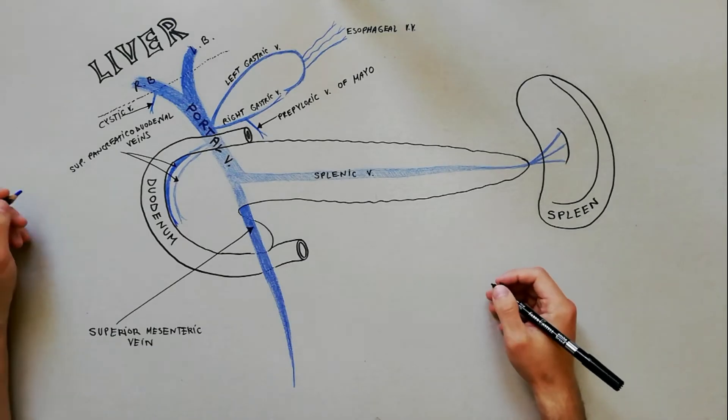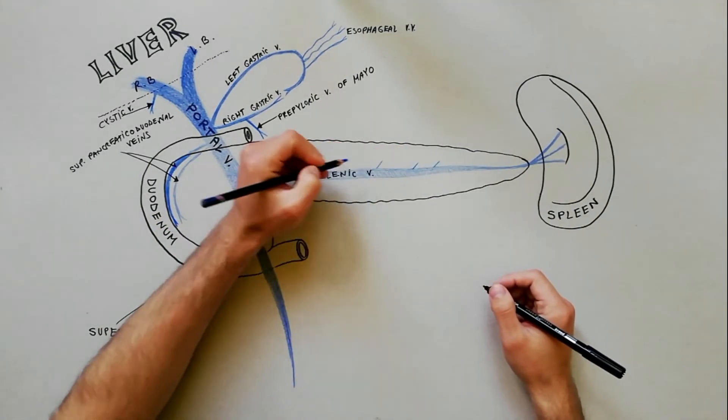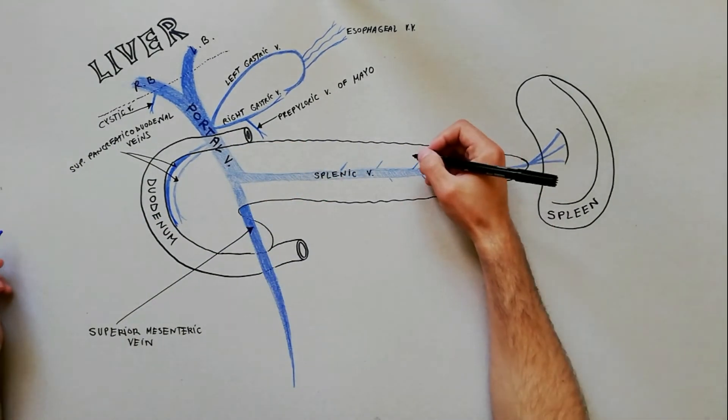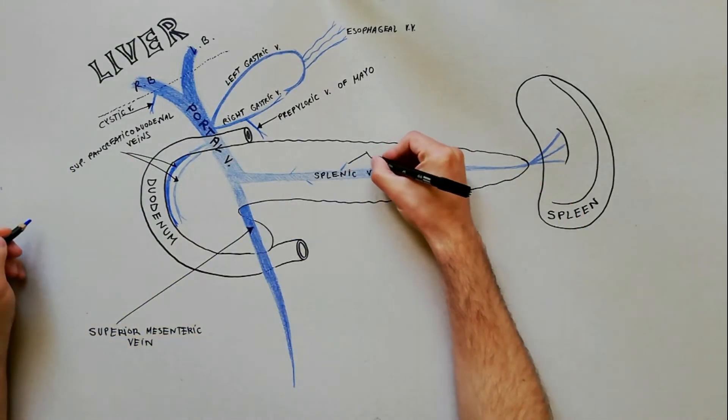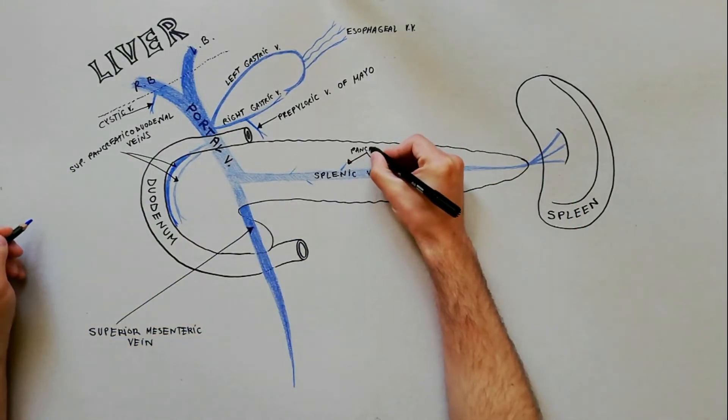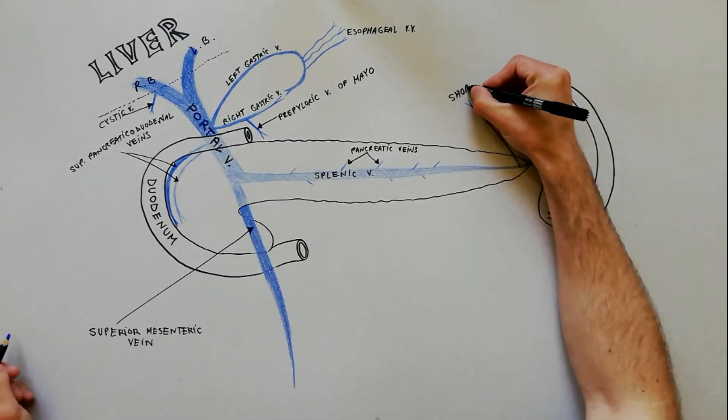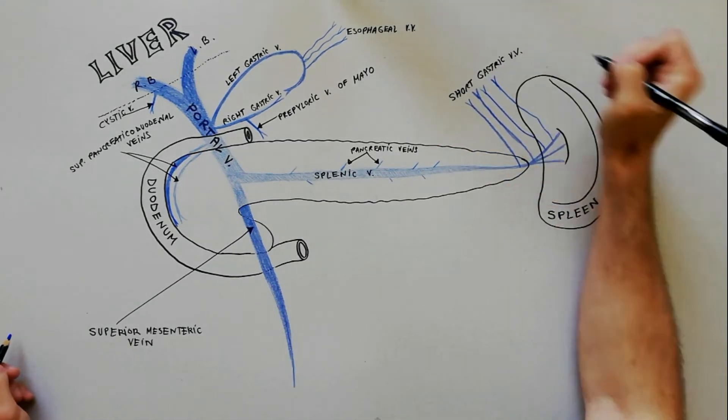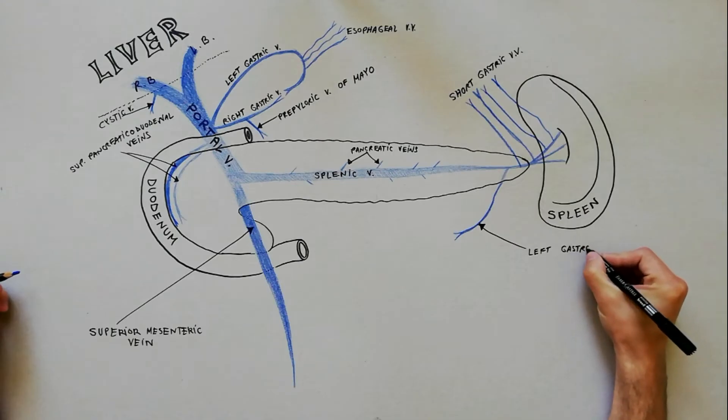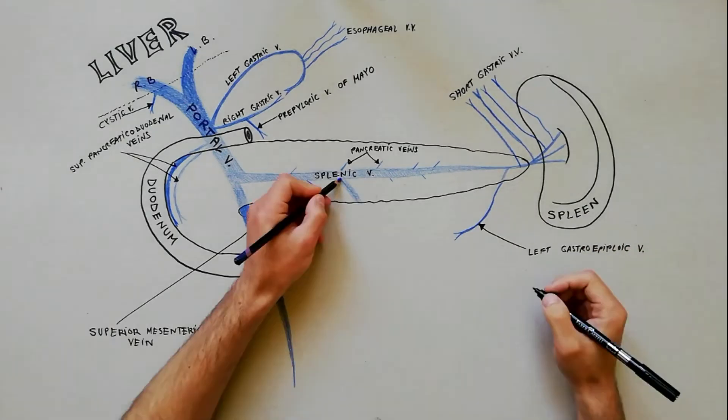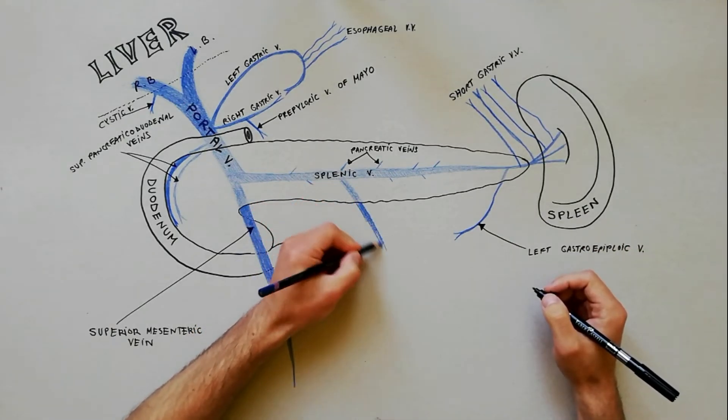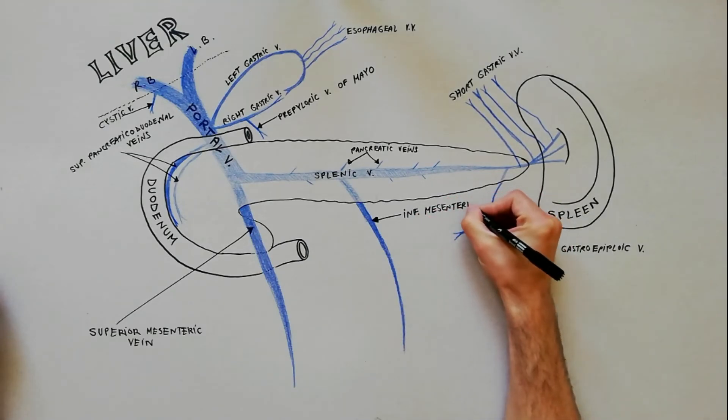The splenic vein, the larger formative tributary of the portal vein, drains the following veins: small pancreatic veins throughout its course, short gastric veins, left gastroepiploic vein, and the inferior mesenteric vein, which is the largest of the splenic vein tributaries.